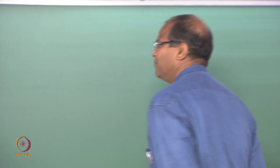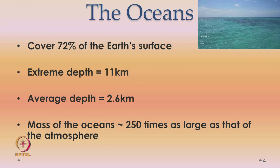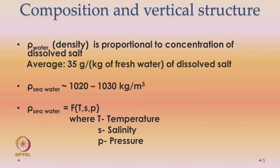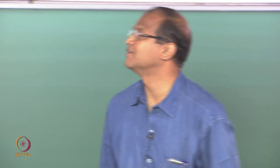The oceans cover 72 percent of the earth's surface. The extreme depth is the Mariana Trench, which is about 11 kilometers deep, and the average depth is about 2.6 kilometers. The mass of the ocean is about 250 times as large as that of the atmosphere. The density of sea water is about 1020 to 1030 kg per meter cube — not 1000, because of the presence of salt, which is about 35 grams per kilogram, roughly 3.5 percent.